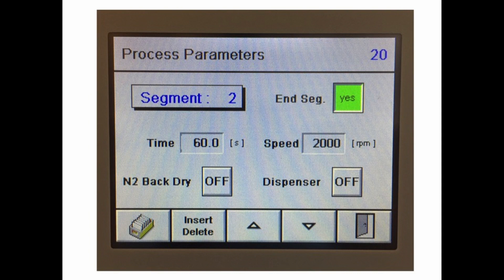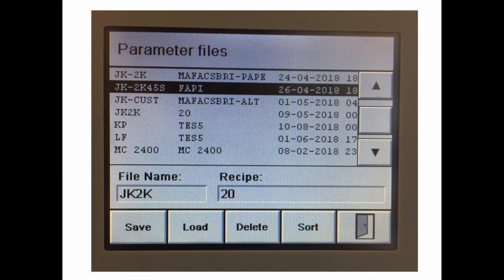Once the spin coater is programmed we can save the parameters by pressing the note cards icon, creating a new file name and recipe, and pressing the save button.